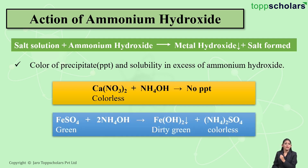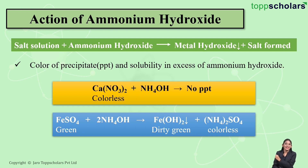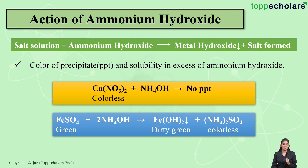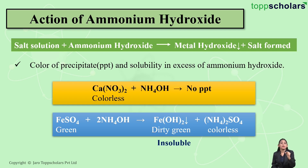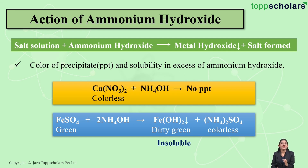Now let us move on to ferrous sulfate solution. Ferrous sulfate solution is a green colored solution. If I add drops of ammonium hydroxide into this solution, it results in the formation of a dirty green precipitate of ferrous hydroxide, Fe(OH)₂, along with ammonium sulfate which is colorless. This dirty green precipitate is insoluble in excess ammonium hydroxide. So if the precipitate formed is dirty green and insoluble in excess ammonium hydroxide, the salt solution contains Fe²⁺ ion.